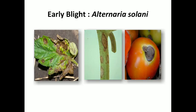Next disease is early blight, caused by Alternaria solani. Lower leaves are affected first and the disease progresses upwards. Small brown-black circular lesions develop on leaves, and in older foliage, concentric rings are formed surrounded by a yellow halo. Similar lesions also appear on the stem and fruit.